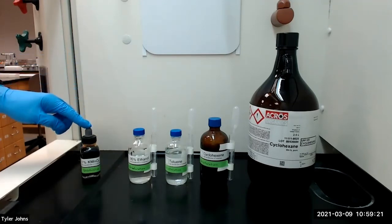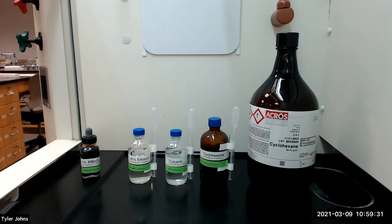We will then slowly add 1% aqueous potassium permanganate solution drop-wise. In a positive test for unsaturation, the purple color of the potassium permanganate reagent is discharged, and a brown precipitate of manganese dioxide forms.